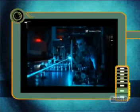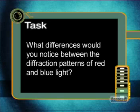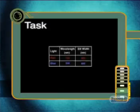After these calculations, I think you're ready for today's task. Instead of passing a red laser light, which has a wavelength of 720 nm, through a slit with a width of 600 nm, we pass a blue laser light, which has a wavelength of 500 nm through the same slit. What differences would you notice between the diffraction patterns of red and blue light? You'll need to do some calculations to support your ideas. The information in this table should be enough to get you started. Thank you for joining me today.